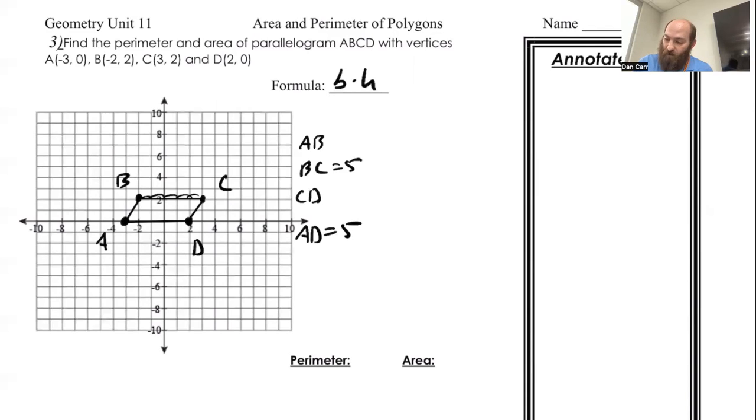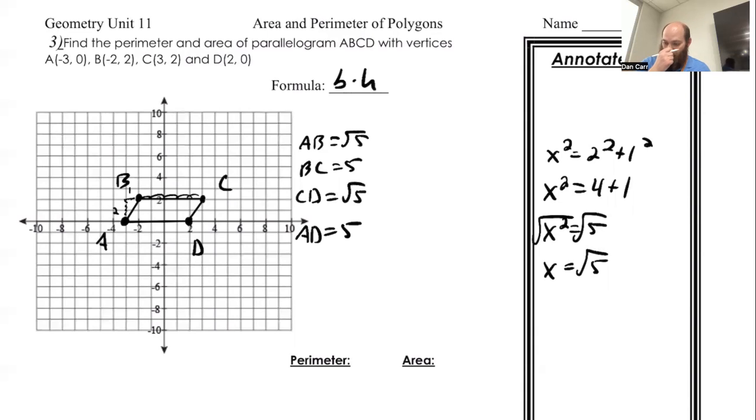For the other two, we've got Pythagorean Theorem. So I've got a 2 and a 1. So I can call it x squared is equal to 2 squared plus 1 squared. That's going to be 4 plus 1. So x squared equals 5. And x equals the square root of 5. So that's both of these.